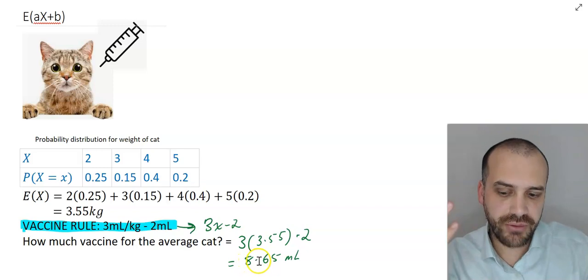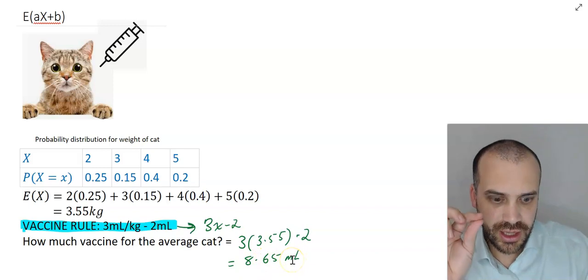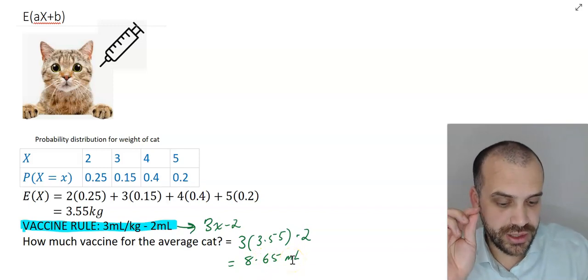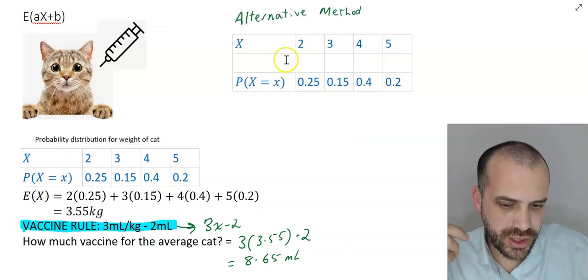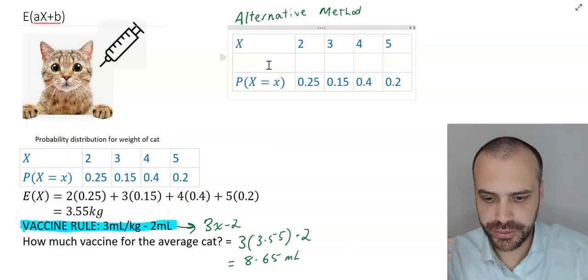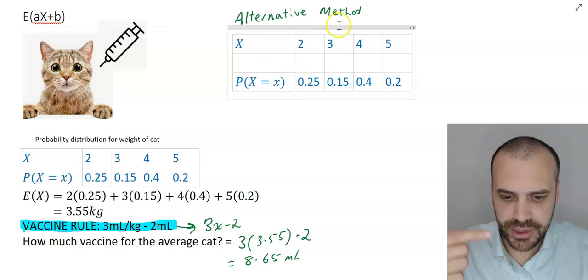Now we could have done that in a different way. Let's recreate this table right here, but this time I'm going to insert an extra row. Now this cat weighs 2 kilograms and there's a 25% probability that happens. This cat weighs 3 kilograms and there's a 15% chance that happens.